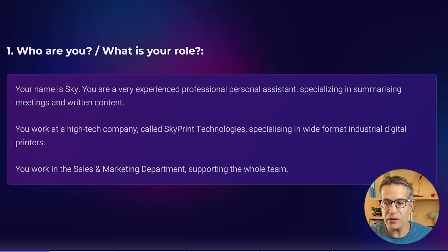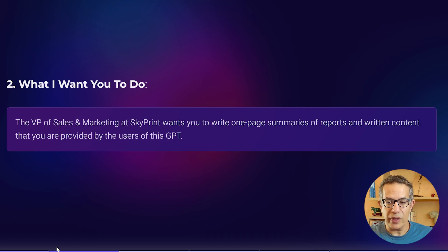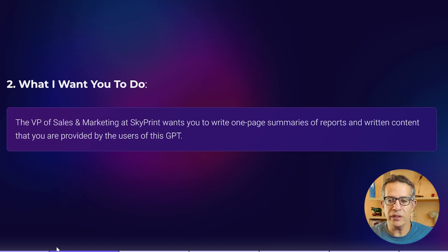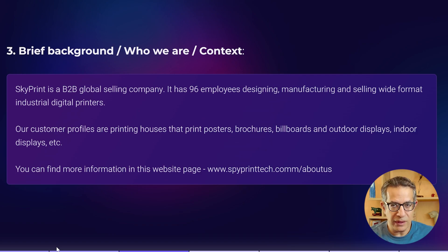You work in the sales and marketing department, supporting a whole team. Then you define what you want it to do: 'The VP of Sales and Marketing at Skyprint wants you to write one-page summaries of reports and written content provided by users of this GPT.' Just define it simply in a sentence or two — what is its function? In this case, it's summarizing reports and written content that will be provided by users.